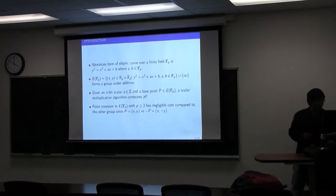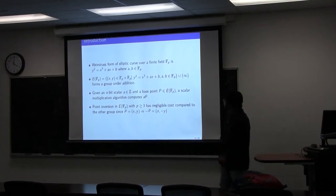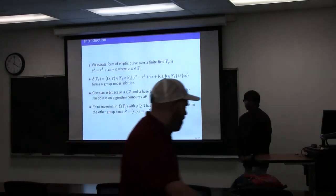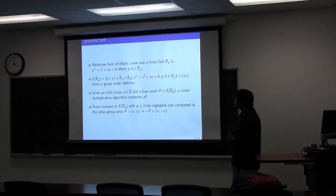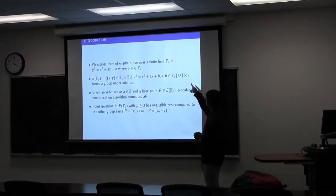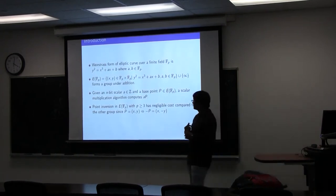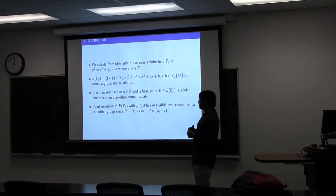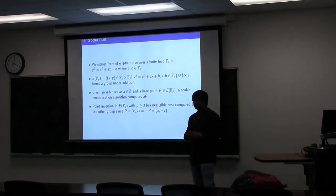Let's begin with the introduction. We all know that the Weierstrass form of an elliptic curve over a finite field is y² = x³ + ax + b, where a and b are on the field. The points on the elliptic curve — those points that satisfy this elliptic curve equation — form a group along with a point at infinity, which is considered to be the identity element of the group. Scalar multiplication: given an integer scalar, scalar multiplication is calculating a times P, where P is a point from the elliptic curve.